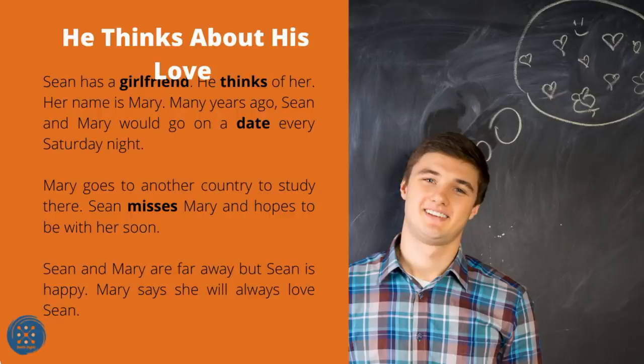He Thinks About His Love. Sean has a girlfriend. He thinks of her — her name is Mary. Many years ago, Sean and Mary would go on a date every Saturday night. Mary went to another country to study. Sean misses Mary and hopes to be with her soon. Sean and Mary are far away, but Sean is happy. Mary says she will always love Sean.